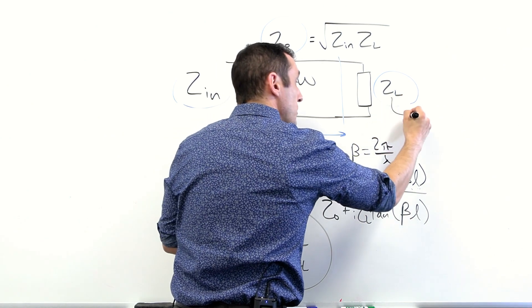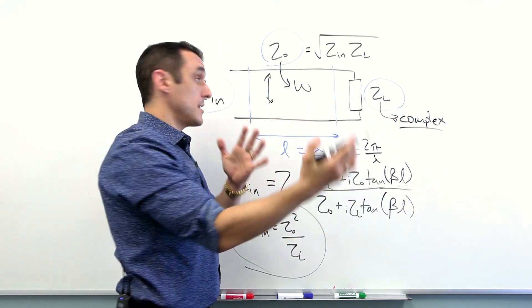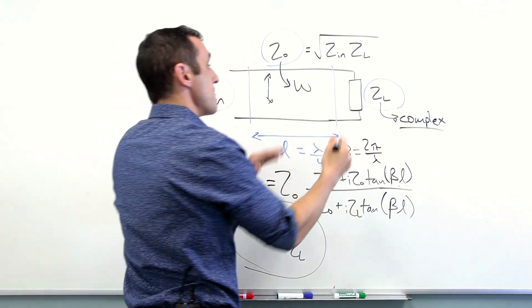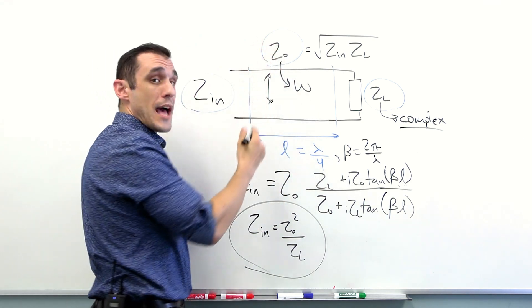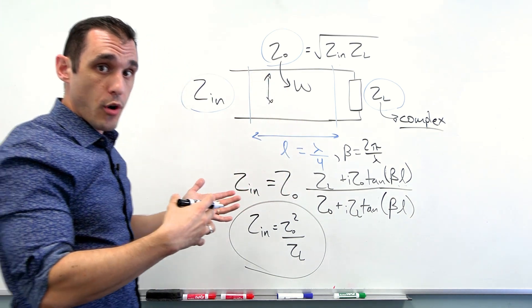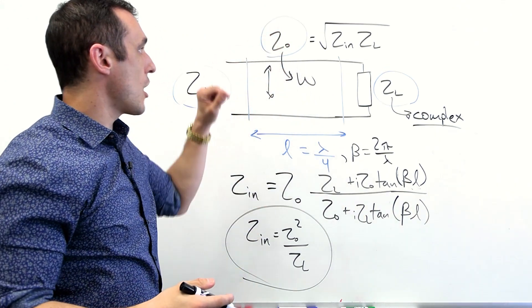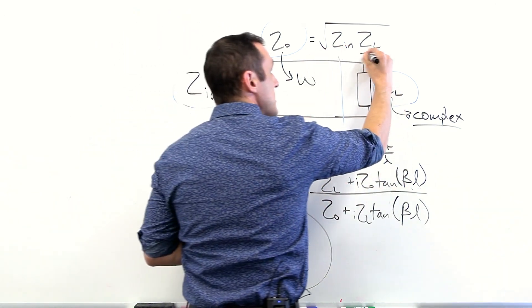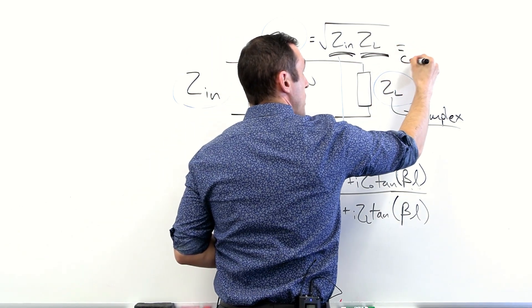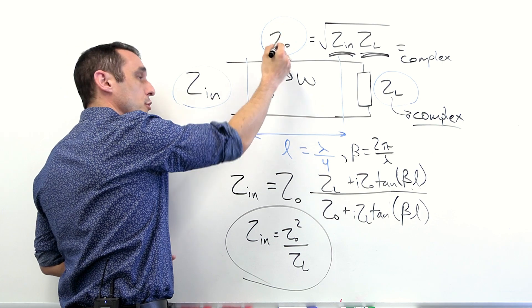Now what do we do if our load impedance is actually complex? This is important because if we have something like an antenna, antennas usually do have some complex component to their impedance. If we want to then use a quarter wavelength transformer to match to that complex impedance, what you will find is that this also has to be complex and you actually won't be able to do it very easily on a PCB because your losses and your dispersion is just not going to be big enough in order to create an impedance transformer that has a large enough complex component to then solve this equation.